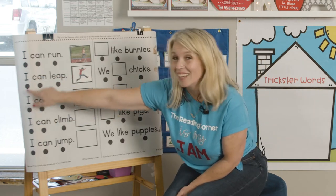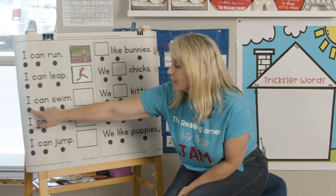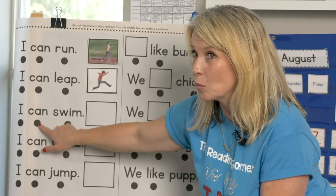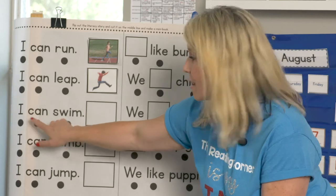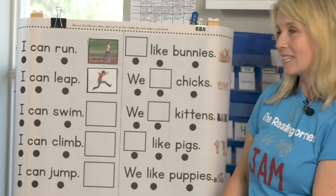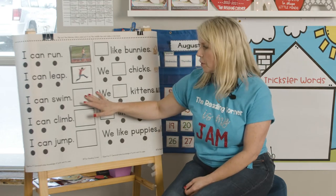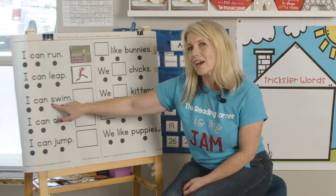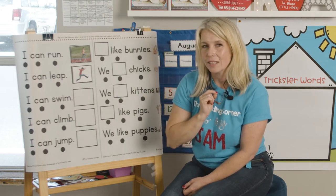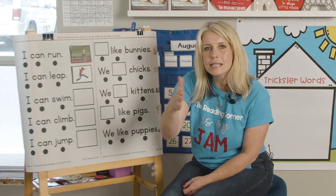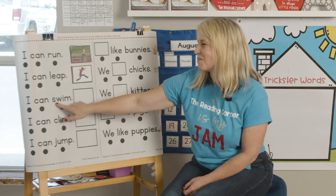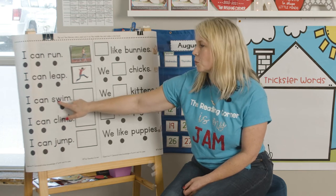You'll notice our I sight word is in the third sentence again, and our can sight word is in our third sentence. I can. How are we going to read this without our picture cue? Well, I know that the S makes the ss sound. Can you do that with me? Ss. Ss. Good job. Wuh. M. Swim.